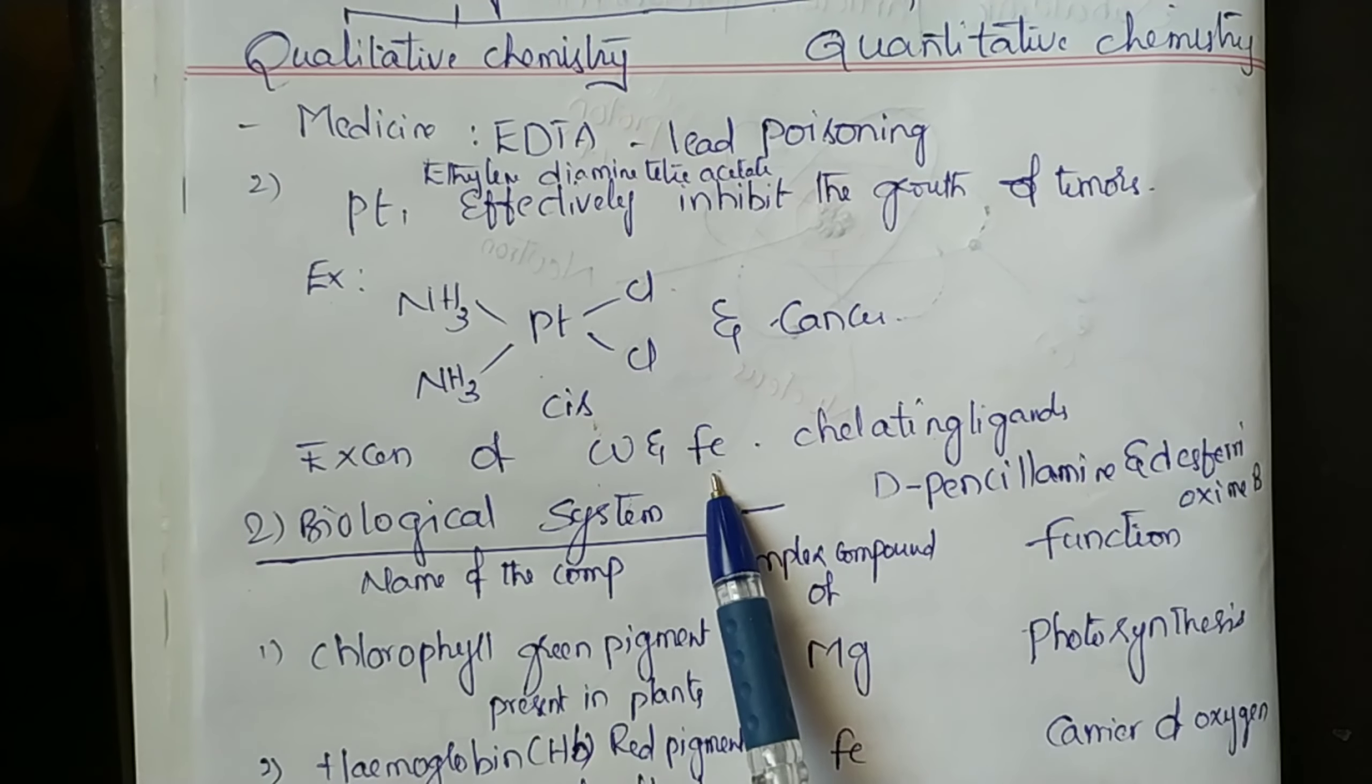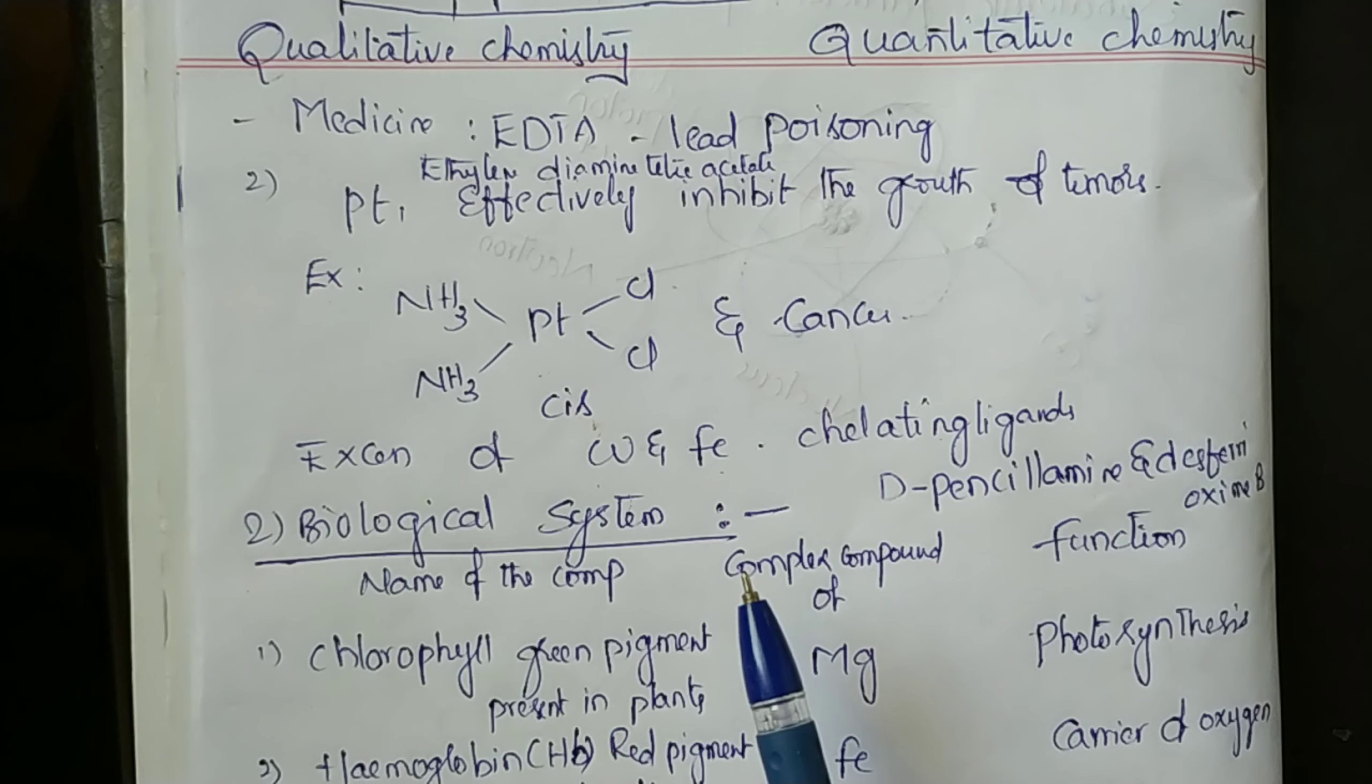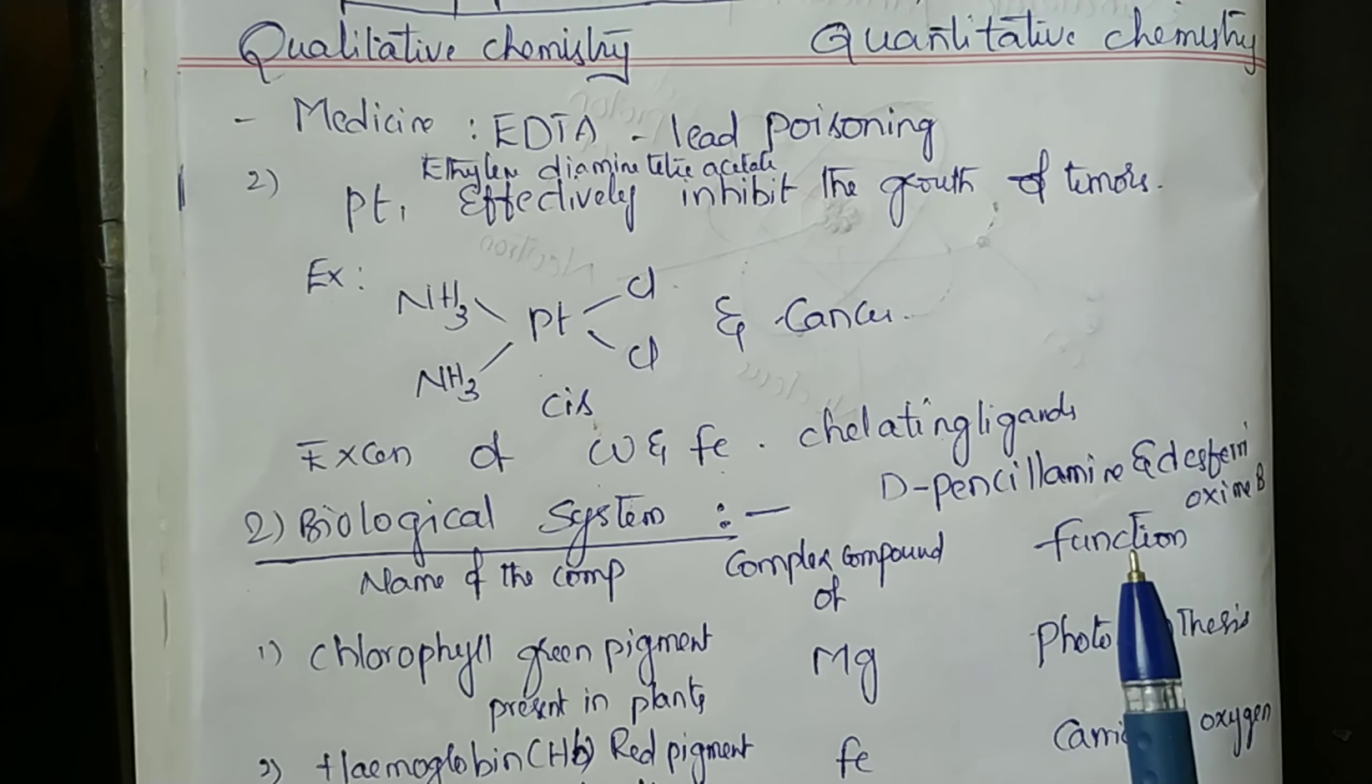Excess copper and iron are removed by the chelating ligands D-penicillamine and desferrioxamine B via the formation of coordination compounds.